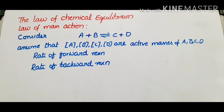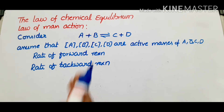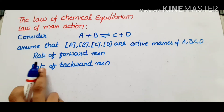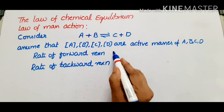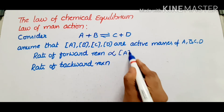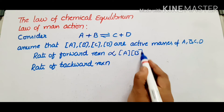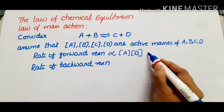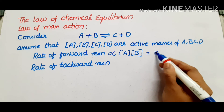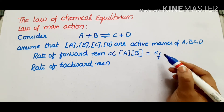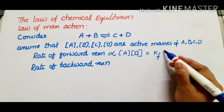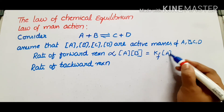Next, rate of forward reaction. For the forward reaction, A plus B forms C plus D. That reaction rate is proportional to the active masses of A and B. Introducing the proportionality constant, the rate of forward reaction equals Kf into [A] into [B], where Kf is the velocity constant of the forward reaction.